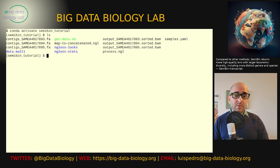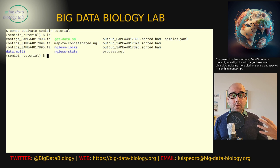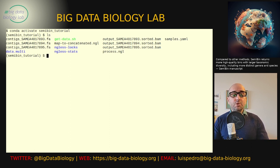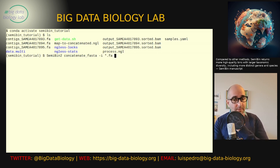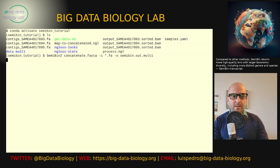What's important here is that we have these three files — contigs underscore, then a sample name, dot fa — and these are the assemblies from the three samples. We're going to be doing multi-sample binning, which is more computationally costly but should give you better bins. The first thing we need to do is build this concatenated file. There's a built-in subcommand in SemiBin — both SemiBin 1 and SemiBin 2 — called concatenate_fasta. We just give it all of the FASTA files and output to the semibin.out.multi directory.